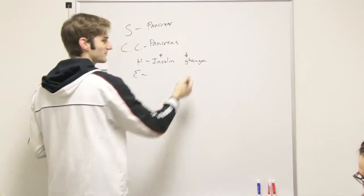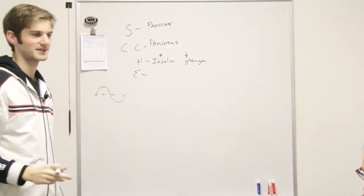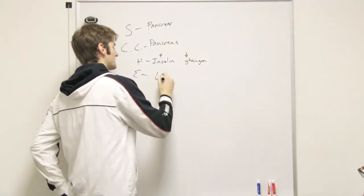When the glucose is gone, when blood sugar is low, glucagon. And the effector is the liver.